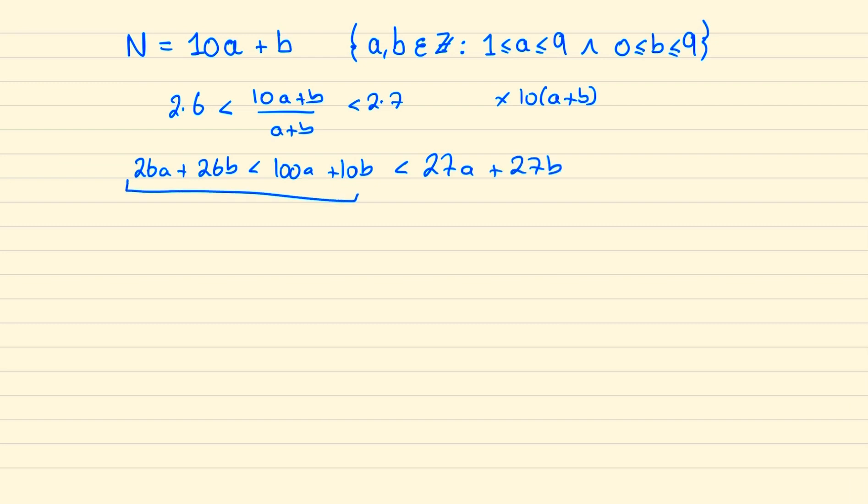And so comparing these two inequalities we have 16b is less than 74a and since this is less than 80a we know b must be less than 5a.